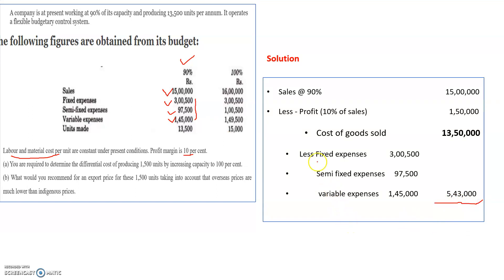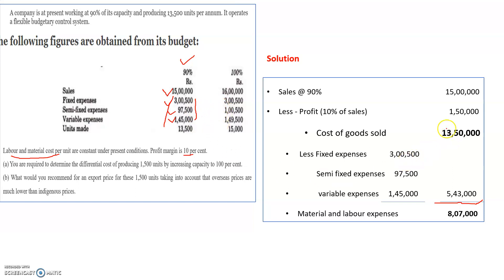Since the total cost is 13,50,000 and the three given items total only 5,43,000, the remaining balance of 8,07,000 is assumed to be material and labor expenses. This balancing figure gives us the material and labor cost at 90% capacity. Now all cost items are identified and we can prepare the statement of differential cost analysis.